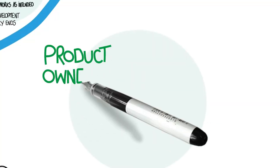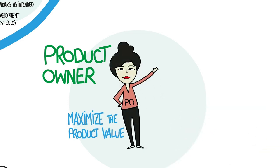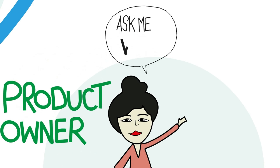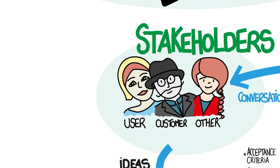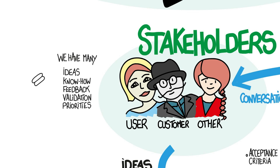Here is the product owner. She is accountable for maximizing the value of the product resulting from the work of the Scrum Team. Her key question is why, and it shows up frequently, both in her conversations with the stakeholders and with the rest of the team. Stakeholders are tremendous sources of ideas, know-how, feedback,